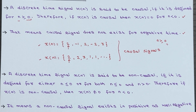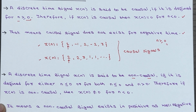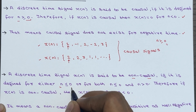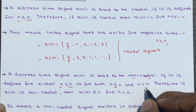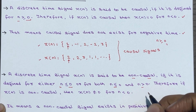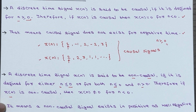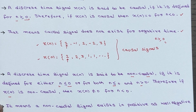On the other hand, a discrete time signal x of n is classified as a non-causal signal if it is defined for either n less than or equal to 0, or for both n less than or equal to 0 and n greater than 0. Therefore, if x of n is non-causal, it will not be equal to 0 for n less than 0.